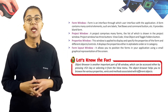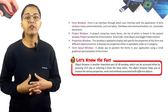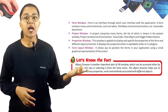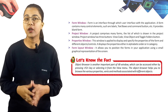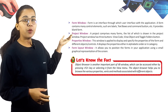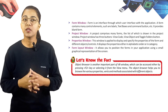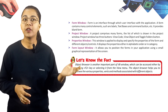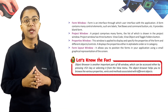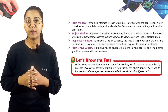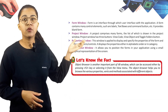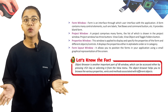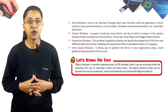The Properties Window is used to display and specify the properties of the form and different object controls. It displays the properties either in alphabetical order or by category. The Form Layout Window allows you to position the form in your application using a small graphical representation of the screen.